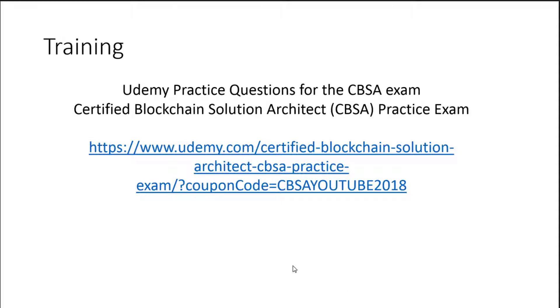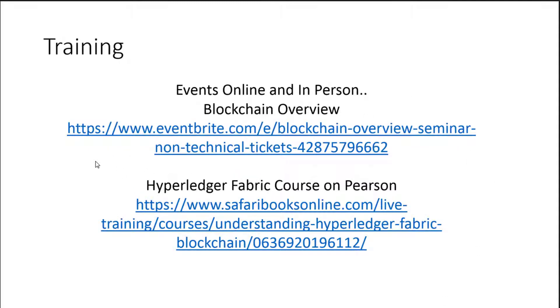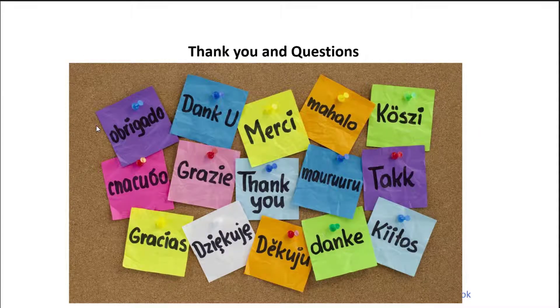There are practice questions on Udemy - the link and discount code are available. There's also a Hyperledger Fabric course on Pearson Safari, where you get video lessons and live online courses for a low monthly fee of around $40-$50. The training from multiple instructors is top notch and very affordable. If you have any questions, please reach out via YouTube or LinkedIn. Good luck on the exam!